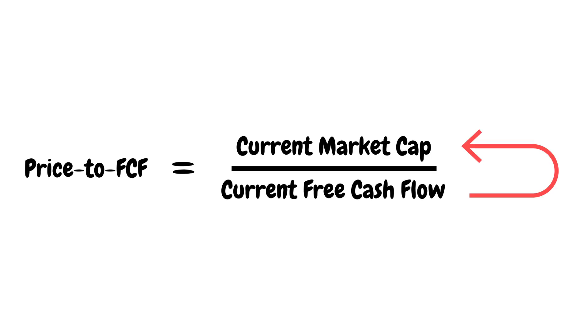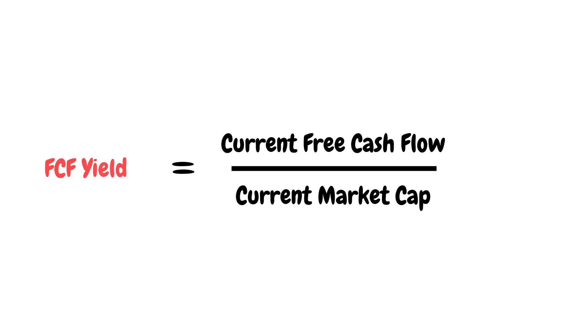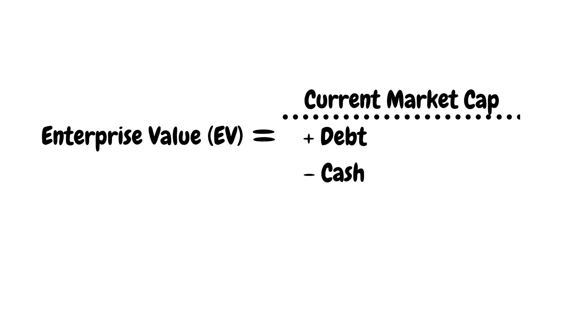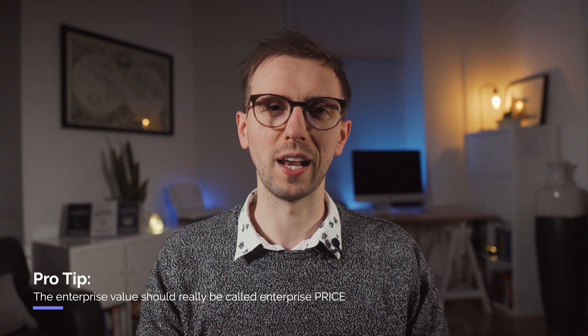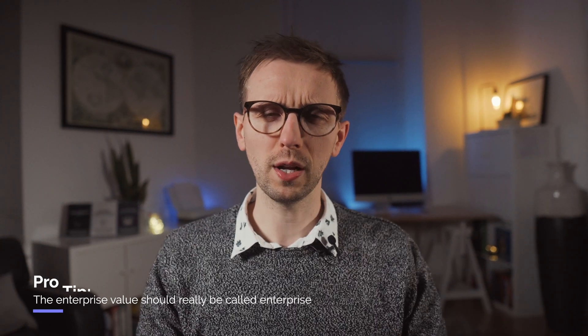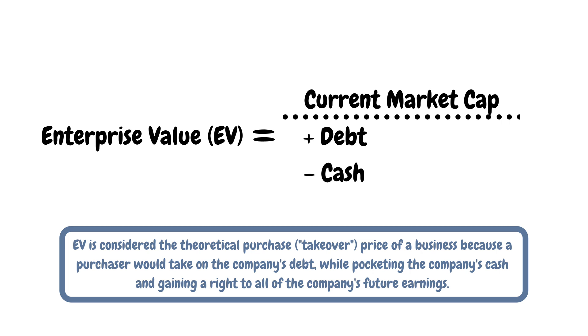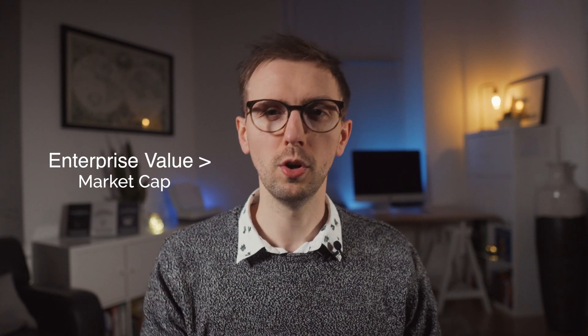You could also swap the numerator and denominator and turn the price-to-free cash flow ratio into the free cash flow yield. Some multiples use a firm's enterprise value, or EV, in the numerator instead of market capitalization. The enterprise value considers market capitalization but also short-term and long-term debt, as well as any cash on the balance sheet. If you buy the entire company at the enterprise value price, no one would hold any financial claim on it. Intelligent investors should always favor enterprise value over market cap, because when you buy a company you are also buying its debt.